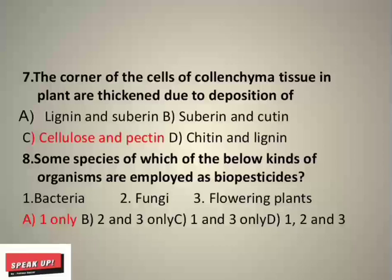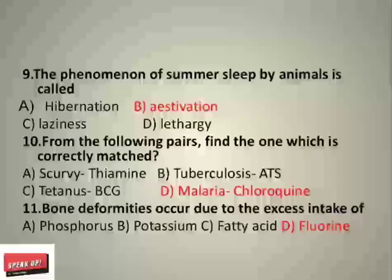Some species of which kinds of organisms are employed as bio-pesticides — bacteria, fungi, or flowering plants? The correct answer is bacteria. The phenomenon of summer sleep by animals is called hibernation, estivation, laziness, or lethargy? The correct answer is estivation. Estivation is summer sleep; many organisms like snails withdraw and lead a life with reduced BMR in a state of dormancy. BMR stands for Basic Metabolic Rate.